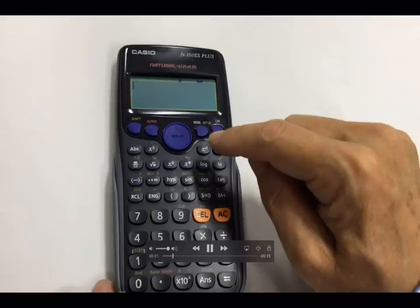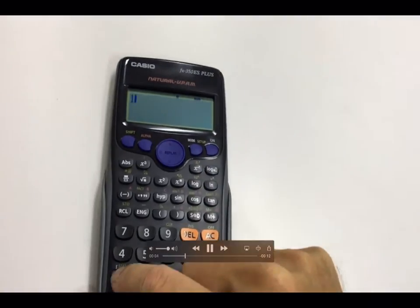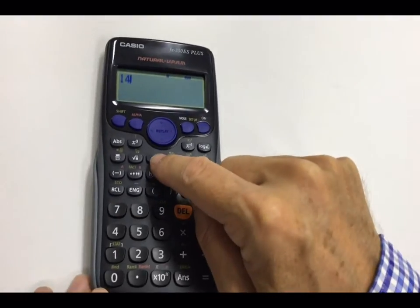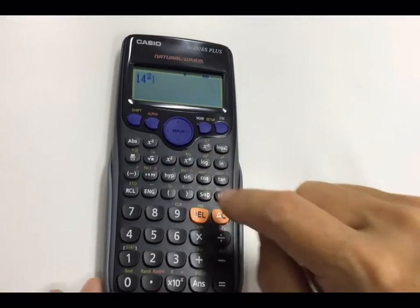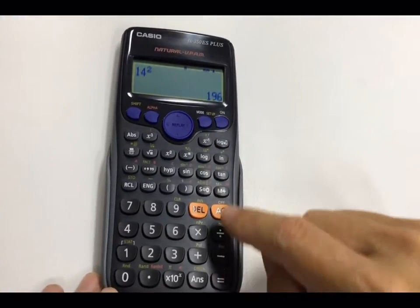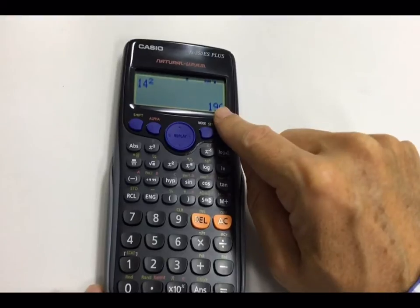OK, we're going to do 14 squared, so we need to press 1, 4, and the squared button is here on the calculator. So press the squared, and then press equals, and we get the answer 196.